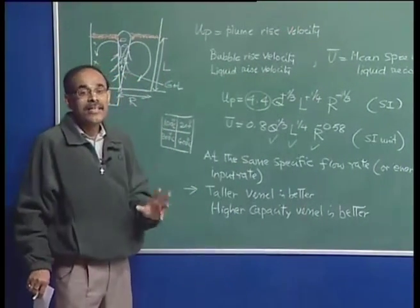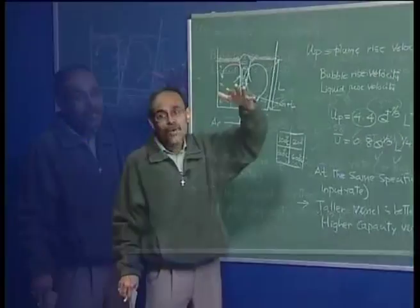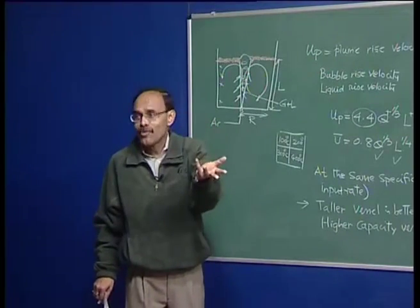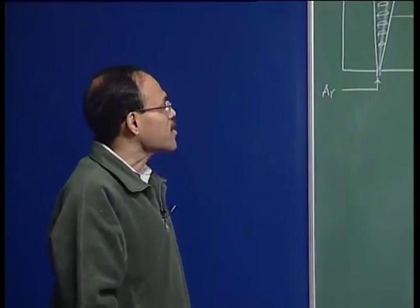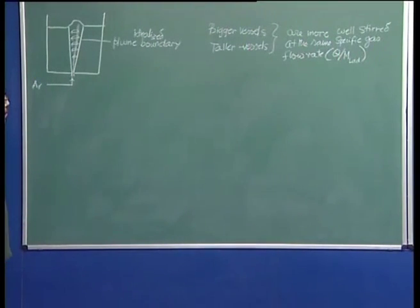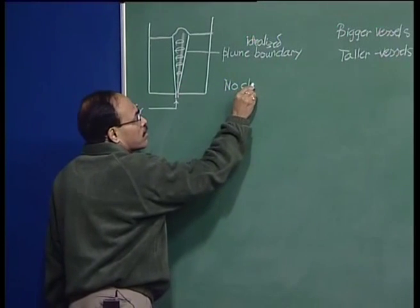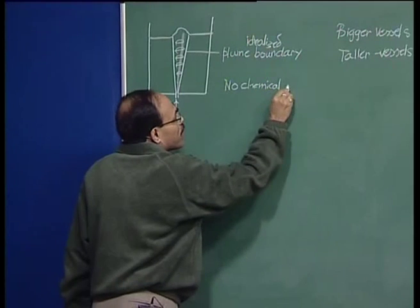A vessel which is 2.5 meters deep will be more effective than a vessel which is only 1.5 meters deep at the same value of specific potential energy input rate. Let us now examine the issue of gas-liquid interactions in the ladle. Typically, because argon is injected, there is no chemical interaction since the solubility of argon in steel is negligible. Whatever interaction is possible is basically thermal interaction.